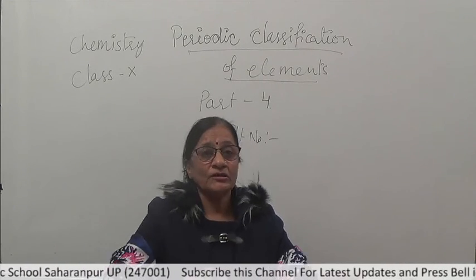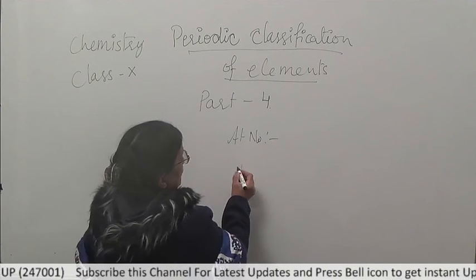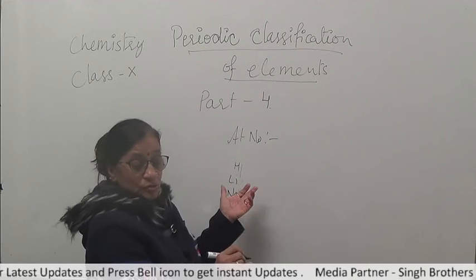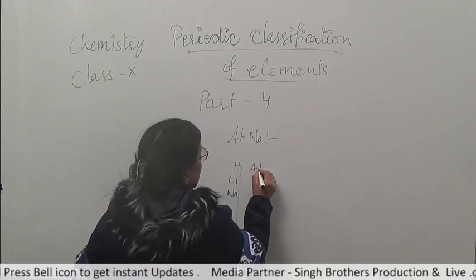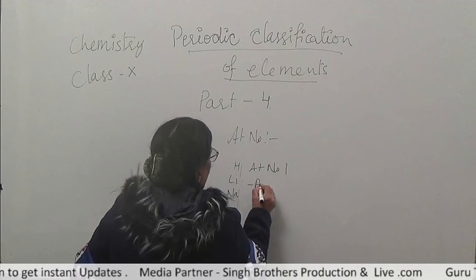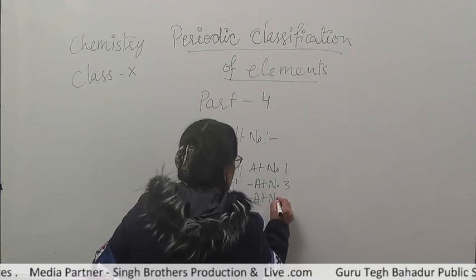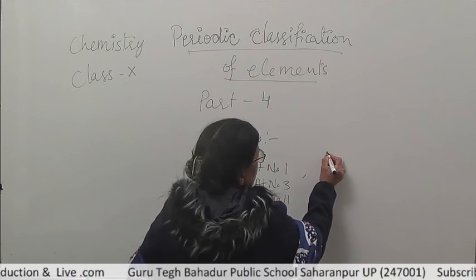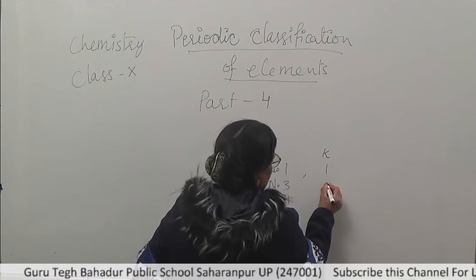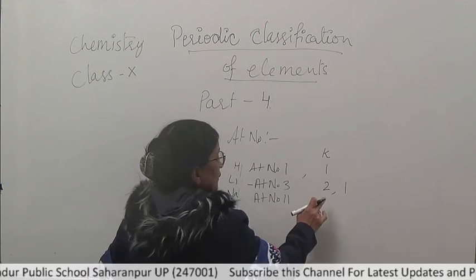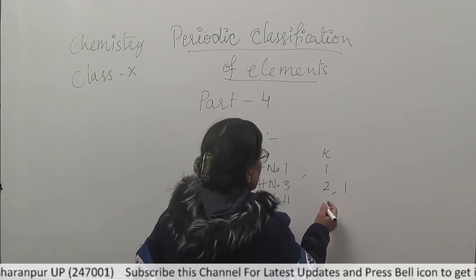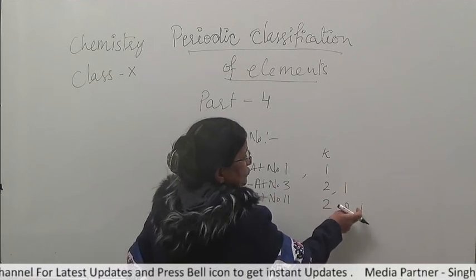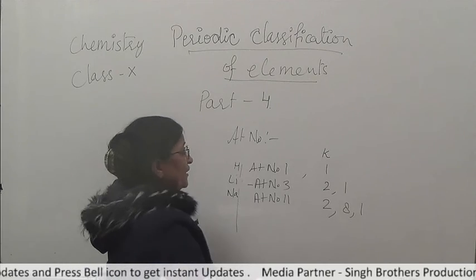If we talk about the elements of group 1, the elements arranged there are hydrogen, lithium, and then sodium. Hydrogen has atomic number 1, lithium has atomic number 3, and sodium has atomic number 11. Their electronic configurations are: hydrogen has 1 electron in shell K; lithium has 2 shells with electrons distributed as 2 and 1; sodium is written as 2, 8, and 1. They all have 1 electron in the outermost orbit, so they belong to group 1.